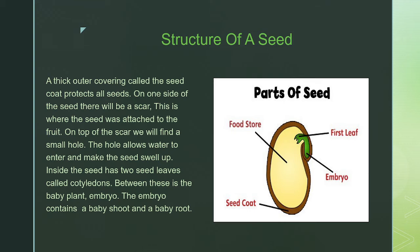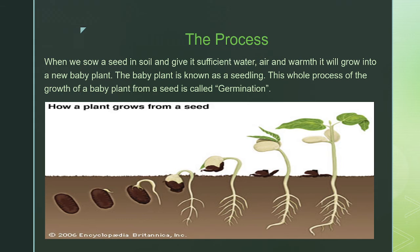In the diagram you can see the process. When we sow a seed in soil and give it sufficient water, air and warmth, it will grow into a new baby plant.